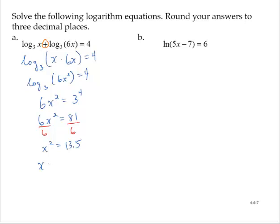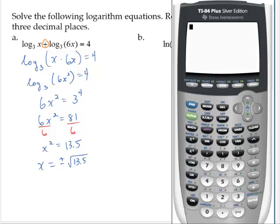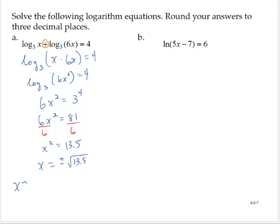Applying the square root property, x is equal to the positive or negative square root of 13.5. And using a calculator, the square root of 13.5 is about 3.674. So then x is approximately negative 3.674, and x is approximately positive 3.674.